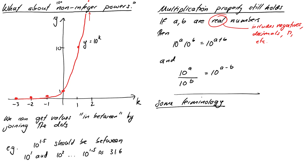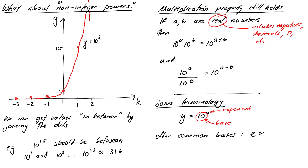A bit of terminology: if we have y equals 10 to the power of a, the number a is called the exponent, and 10 is called the base. We sometimes use other bases — a very common one is the special number e, which is about 2.71828, and another common base is 2, especially in computing with binary. But we're going to focus on base 10 for now. It's worth being aware that the most commonly used base in science is actually e, so if you go on to do further science you'll probably use it even more often than powers of 10.